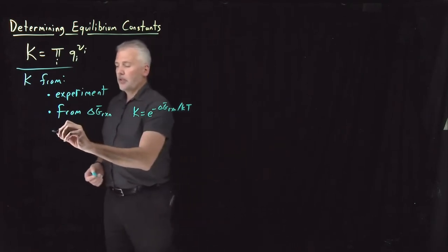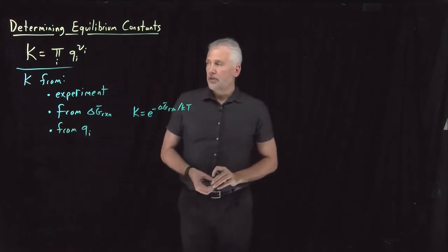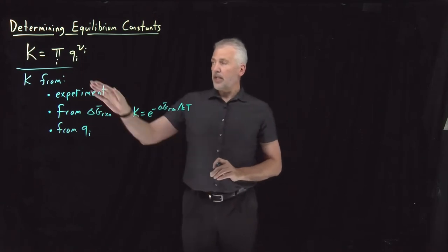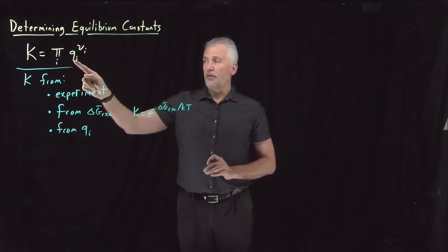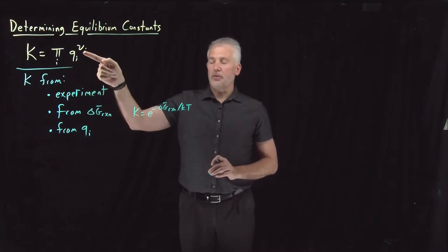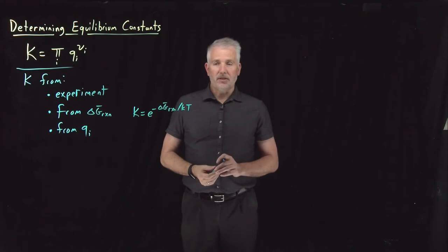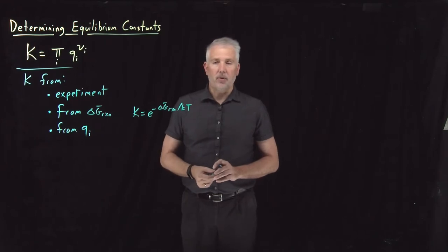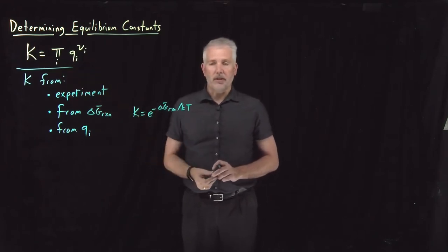We can also get the value of K from partition functions, as this expression says. Our understanding of equilibrium constants most recently is that it's this product of partition functions raised to their stoichiometric coefficients. If the reactants and products in our reaction are simple enough that we can understand what their partition functions are based on what we already know about quantum mechanics or statistical mechanics, then we can use this expression to write them down directly.